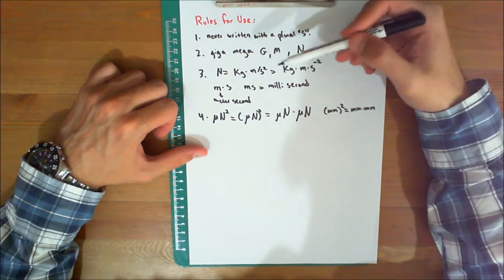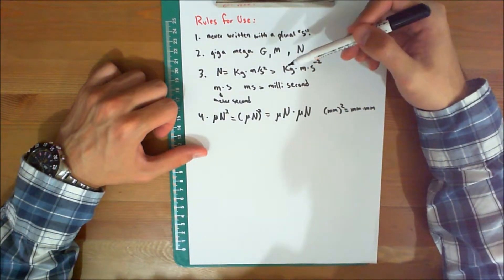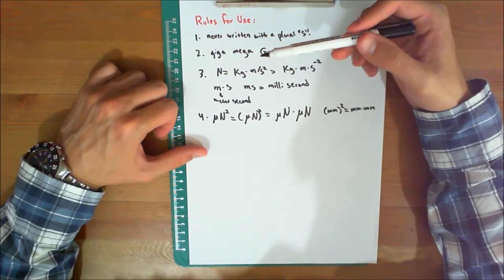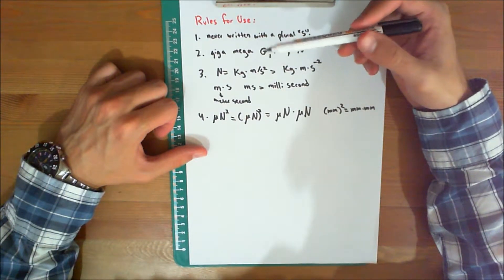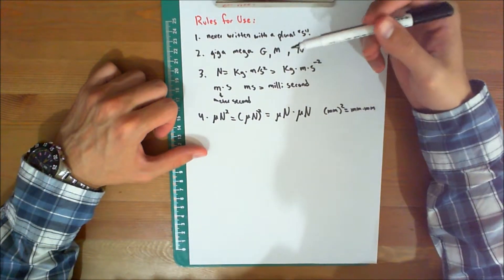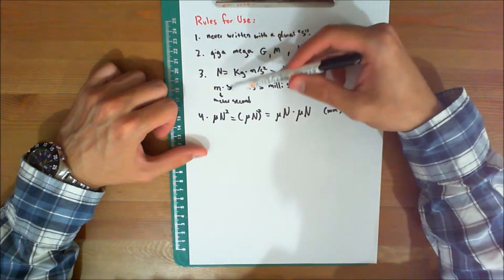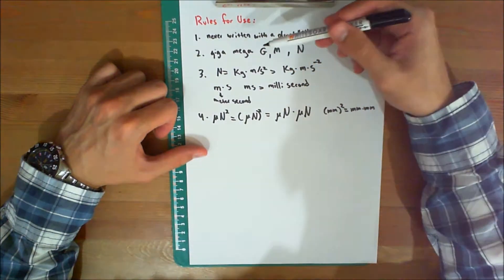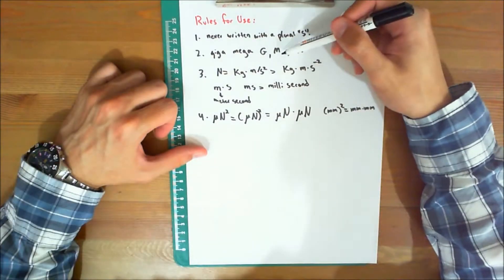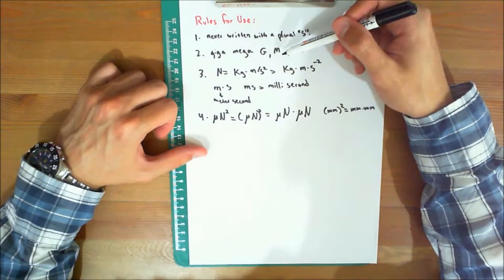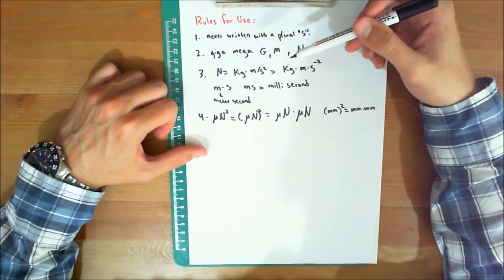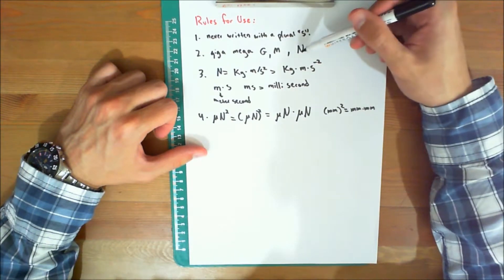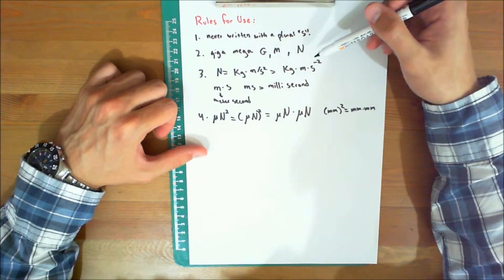Number two: symbols are always written in lower case letters with the following exceptions. Symbols for the two largest prefixes, giga and mega, are capitalized as capital G and capital M respectively. And symbols named after an individual are also capitalized — for example, N for newtons, named after Sir Isaac Newton.